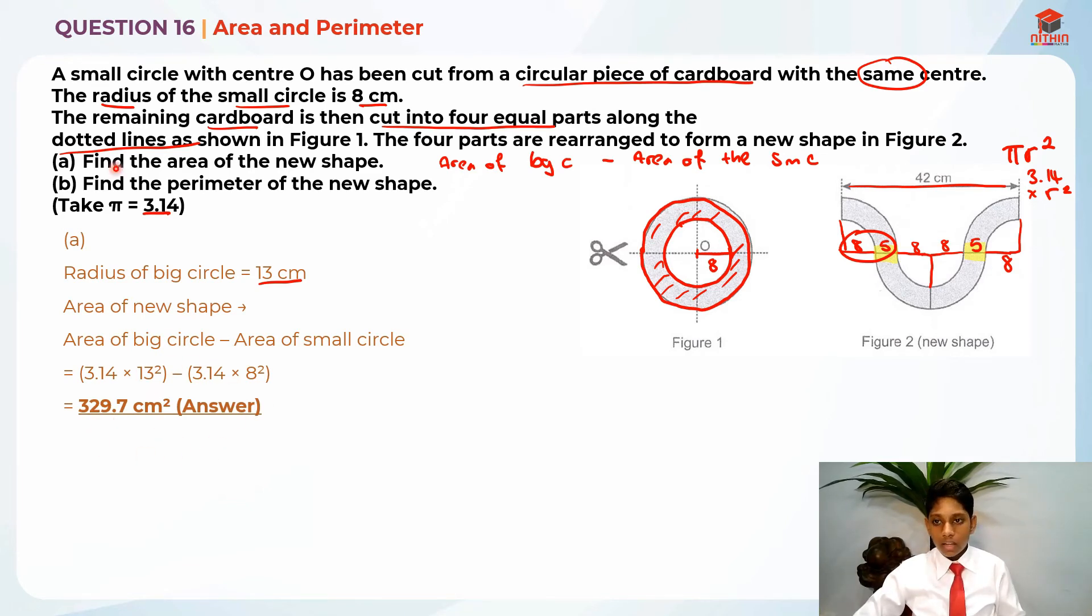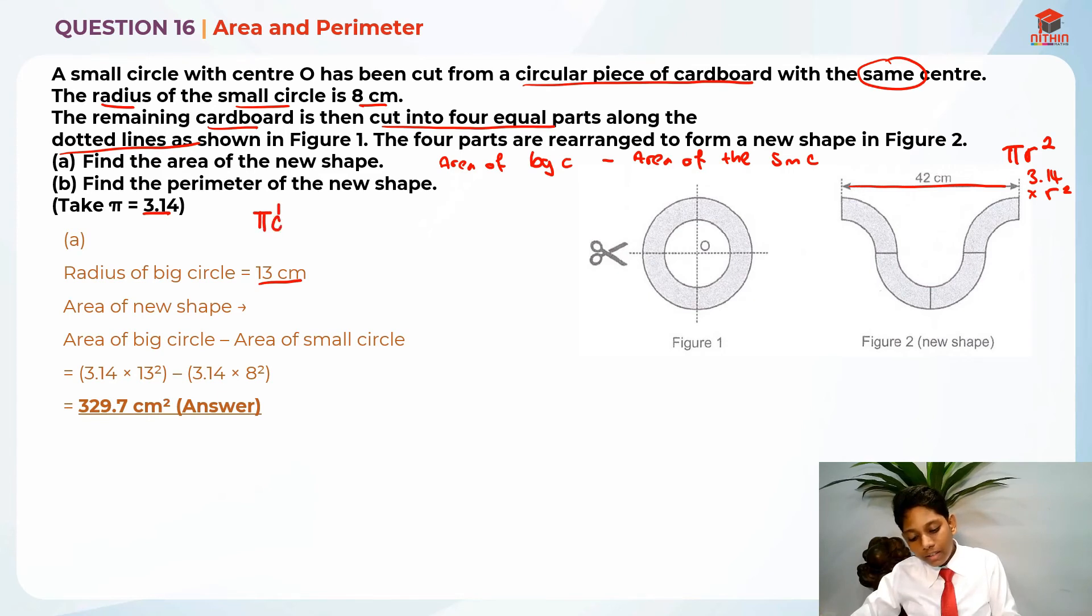Now let's do the second part of the question, part B. Find the perimeter of the new shape. The perimeter of the new shape. Let me erase whatever I've written over here. So the perimeter of the new shape. Do you remember what is the formula for circumference of a circle? It's basically pi D. Pi D means pi times diameter.